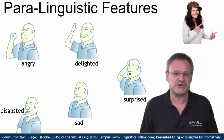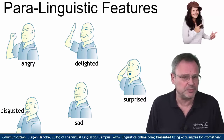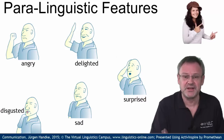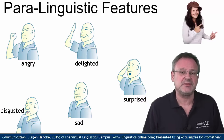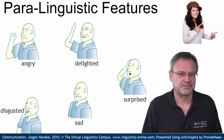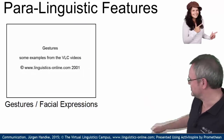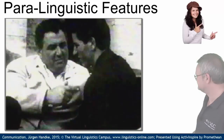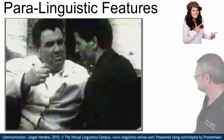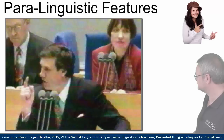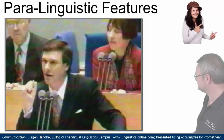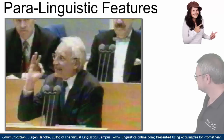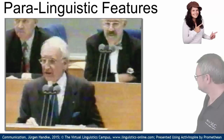Paralinguistic features may vary across languages and are often dependent on the topic to be communicated. These include, among others, gestures, facial expressions, and all those aspects that accompany the uttering of linguistic constructions. Here is an example of gestures used during political speeches in the German parliament. Gestures may vary across languages and are often dependent on the topic to be communicated.